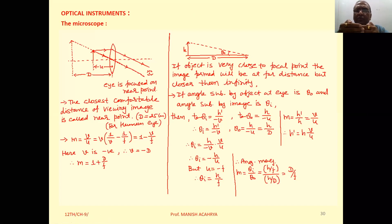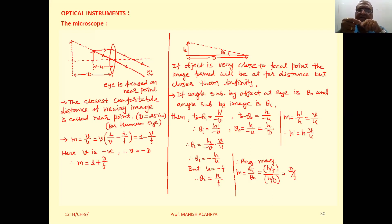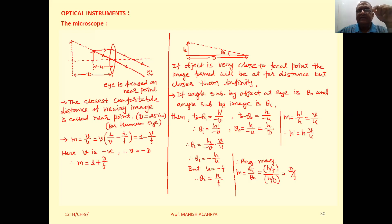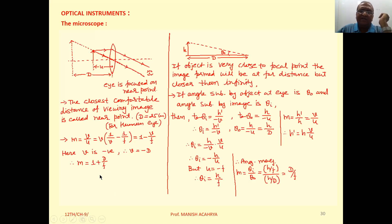The object is very close to the focal point, so in this case the image formation will take place towards the object's side and D is large. We can neglect one, and in that particular case we can simply write the magnification as D by F.